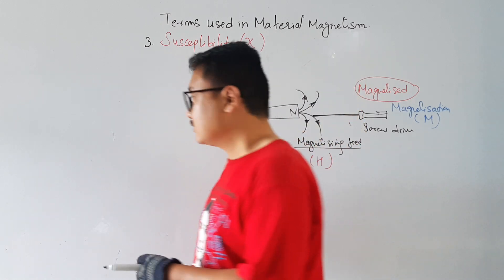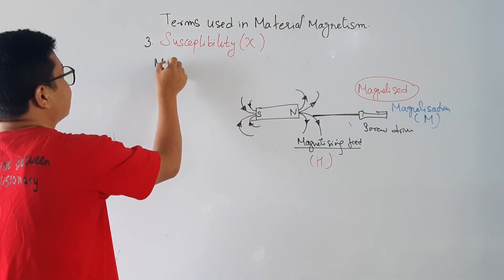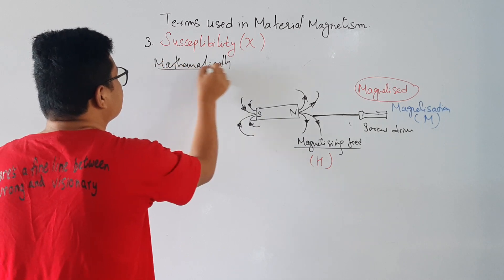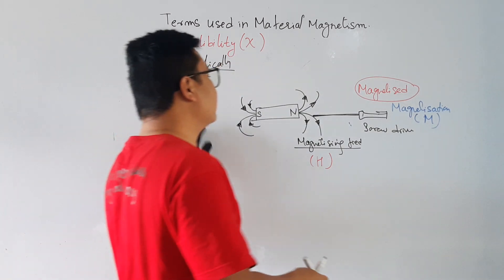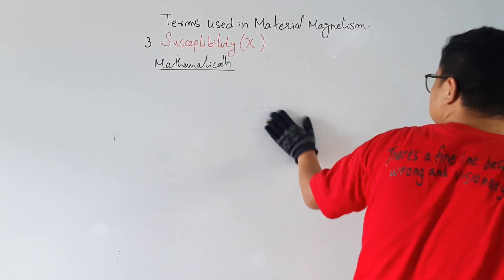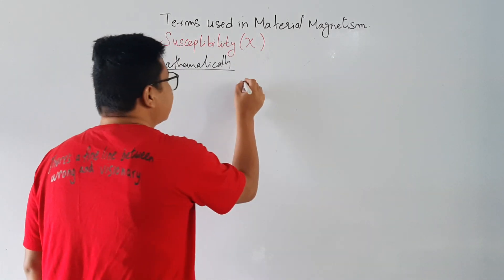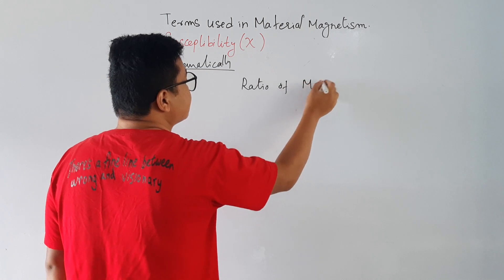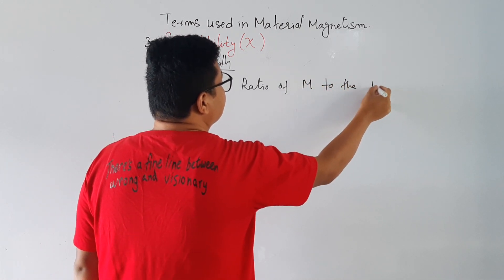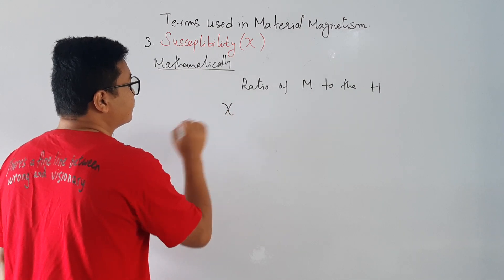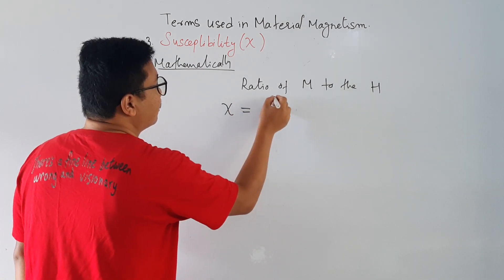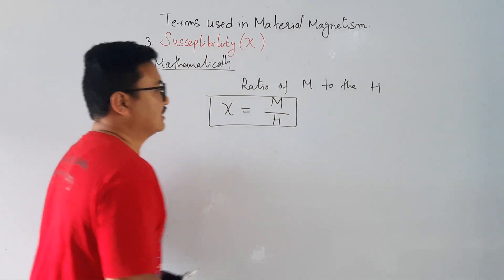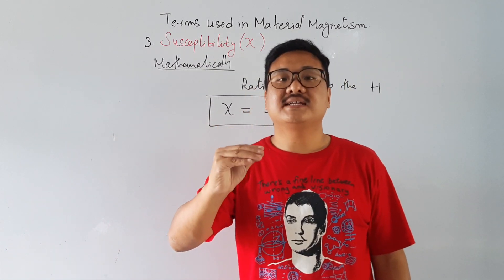Mathematically, susceptibility is the ratio of magnetization M to the magnetizing field H. So the susceptibility Chi equals M divided by H.